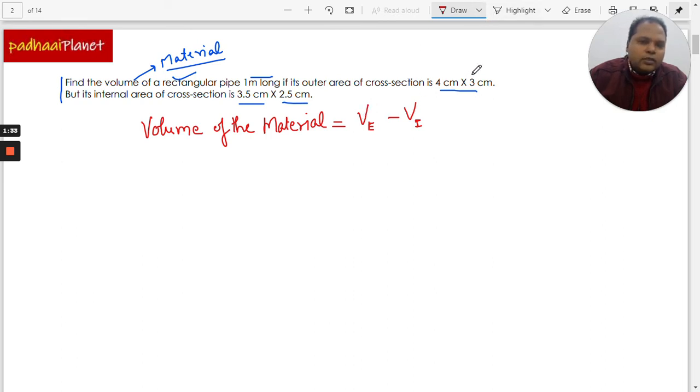Now this is very simple. Here the cross-section area, if you know this is the pipe, and this is the cross-section, they have given us the cross-section area from the outside, the external one, and also the internal one.